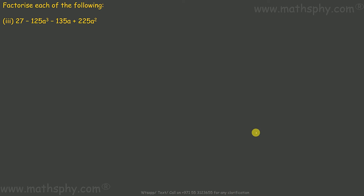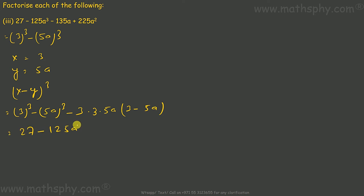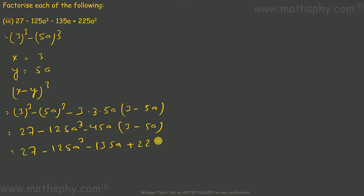Now this one here: 27 can be taken as 3 cube and 125a cube can be taken as 5a whole cube. So if I take x as 3 and y as 5a, and put this into the x minus y whole cube format, x cube is 3 cube minus y cube which is 5a cube, minus 3 into x which is 3 and y which is 5a, then x minus y means 3 minus 5a. This comes to 27 minus 125a cube minus 45a times 3 minus 5a, which comes to 27 minus 125a cube minus 135a plus 225a squared.